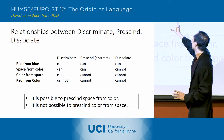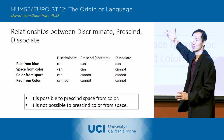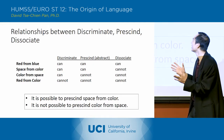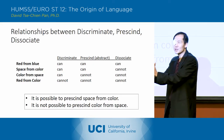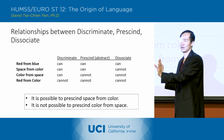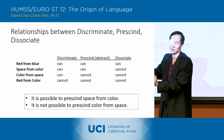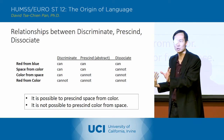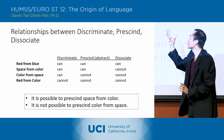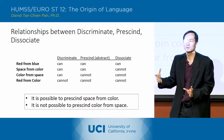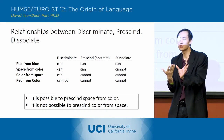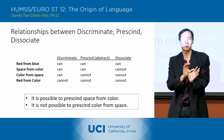In the middle we have prescinding, precision or abstraction — this tricky middle thing. What it is: you're focusing on one thing while neglecting, or just kind of ignoring, the other. You can do that with red and blue — focus on red and ignore blue, no problem. Now here's where it gets tricky: you can prescind space from color, which means you focus on the space and just neglect color, just ignore color while focusing on space.